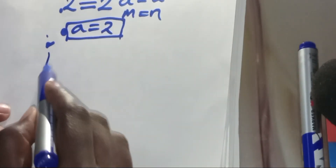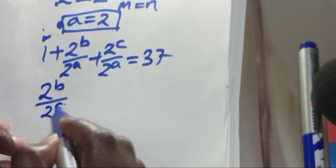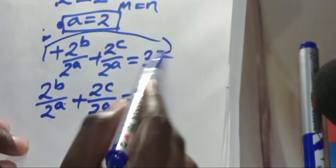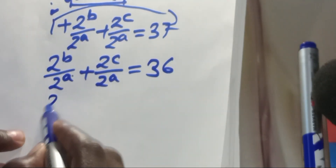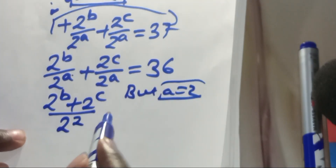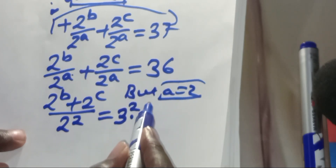From the parentheses, we have 1 plus 2^B over 2^A plus 2^C over 2^A equal to 37. Taking 1 to the right-hand side: 2^B over 2^A plus 2^C over 2^A equals 36, which is the same as (2^B plus 2^C) divided by 2^A. Since A equals 2, we divide by 2 squared. So 36 can be expressed as 3 squared times 2 squared, giving us 2^B plus 2^C equals 3 squared times 2 to the power 4.